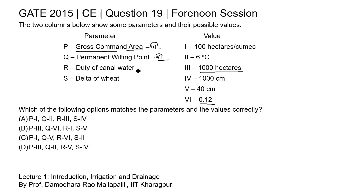Next is duty of canal water. Duty is defined in hectares per cumec — the amount of area that can be irrigated from one cumec of water. Looking at the values in column 2, the matching value is in hectares per cumec. So the correct match for R (duty of canal water) is 1.